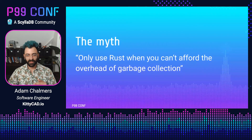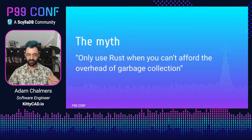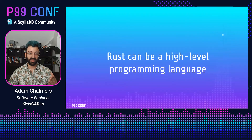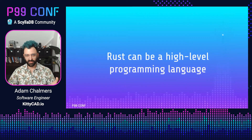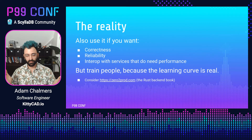So to recap: I often hear engineers say you should only use Rust when you can't afford garbage collection pauses, but I'd really disagree with this. People often think of Rust as a really low-level language, but I think Rust can actually be a great high-level programming language for focusing on correctness and stability guarantees, for getting your domain logic correct. It can be a great high-level programming language for backends. That's why I use Rust — not for performance-critical code, but for correctness-critical code.